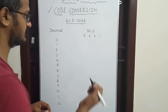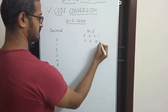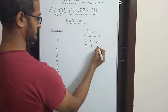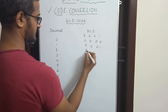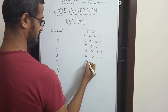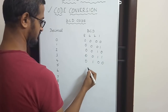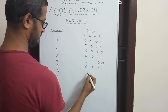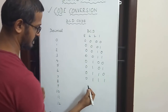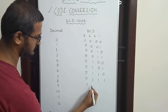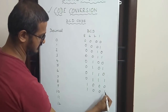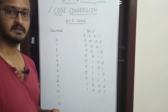The BCD 8421 table: 0 is 0000, 1 is 0001, 2 is 0010, 3 is 0011, 4 is 0100, 5 is 0101, 6 is 0110, 7 is 0111, 8 is 1000, and 9 is 1001. That gives us 10 combinations split across 4 bits.